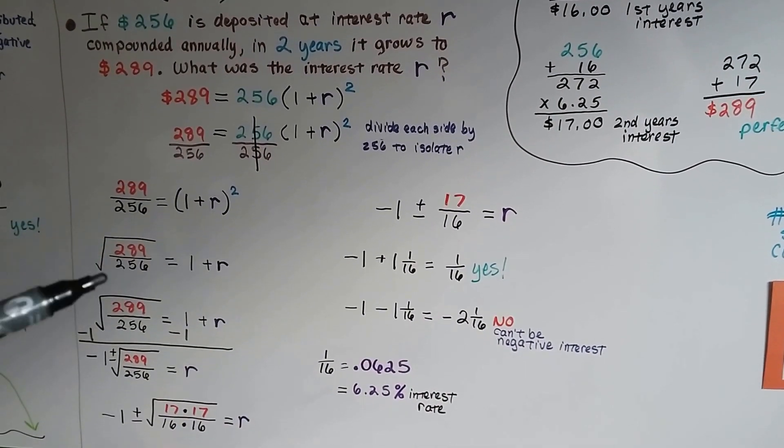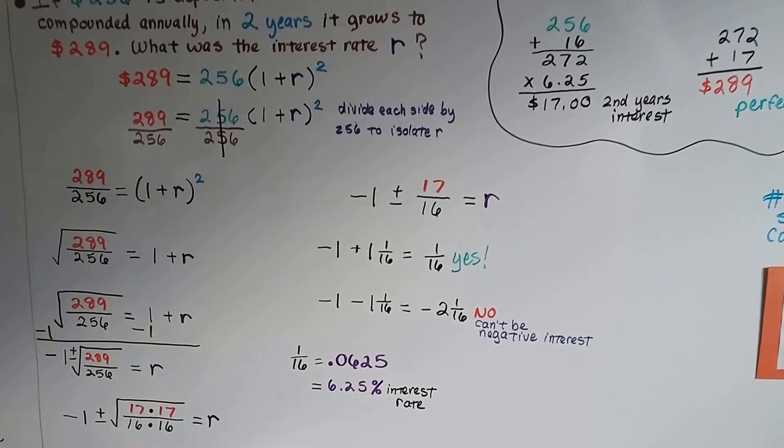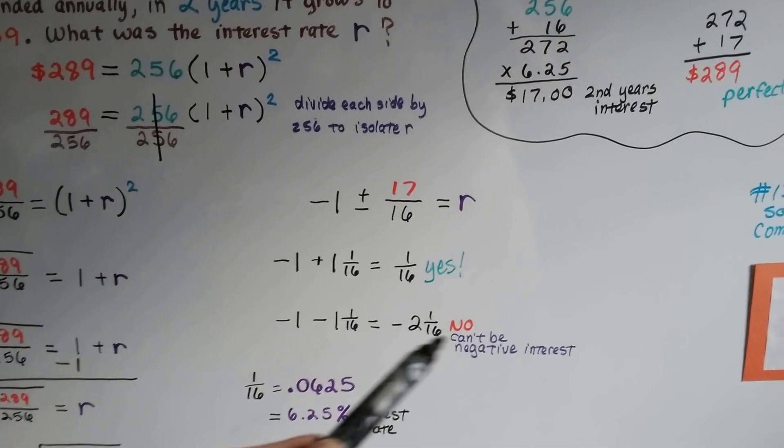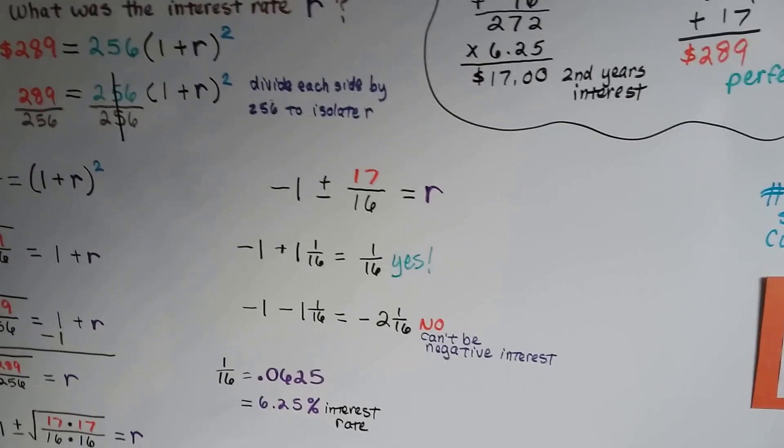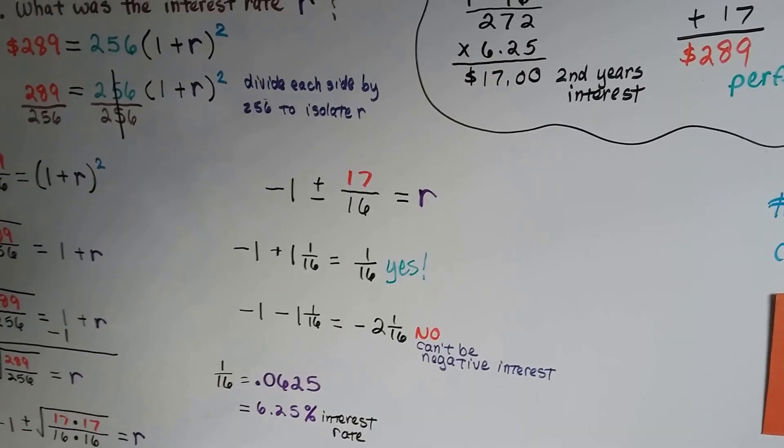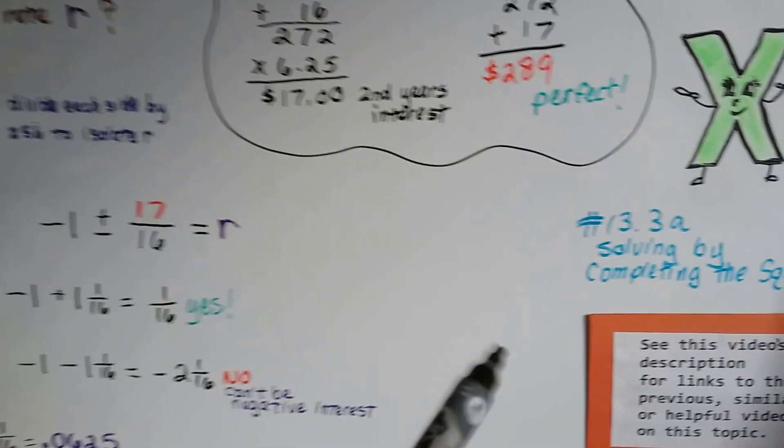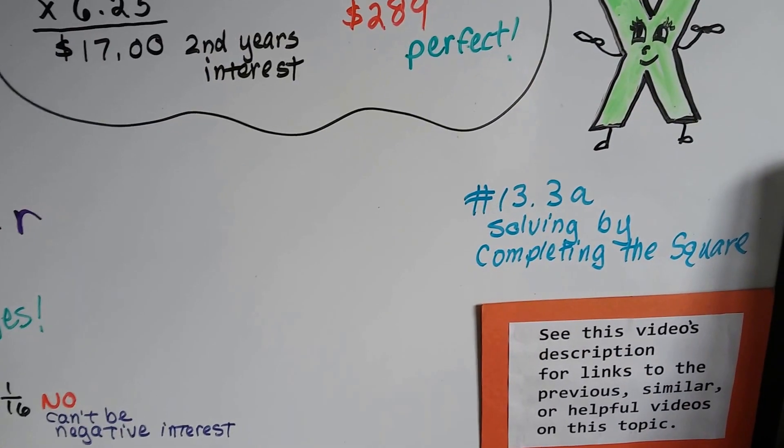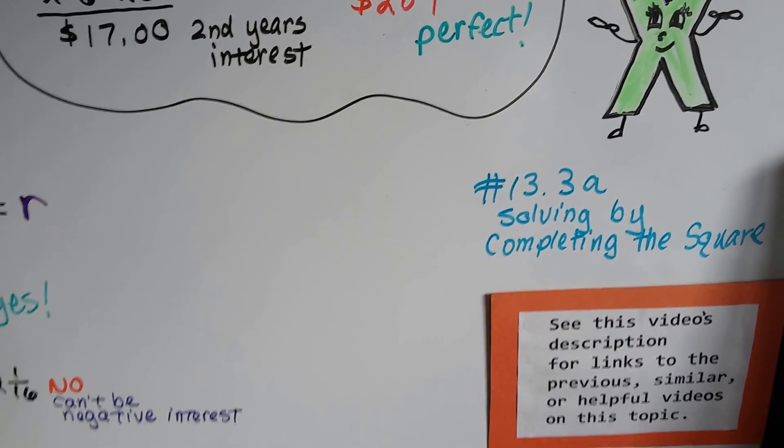Just take it nice, easy little steps. Remember that an interest rate or time cannot be negative. So it would have to be the positive one. Our next video is going to be 13.3a, and we're going to talk about completing the square.